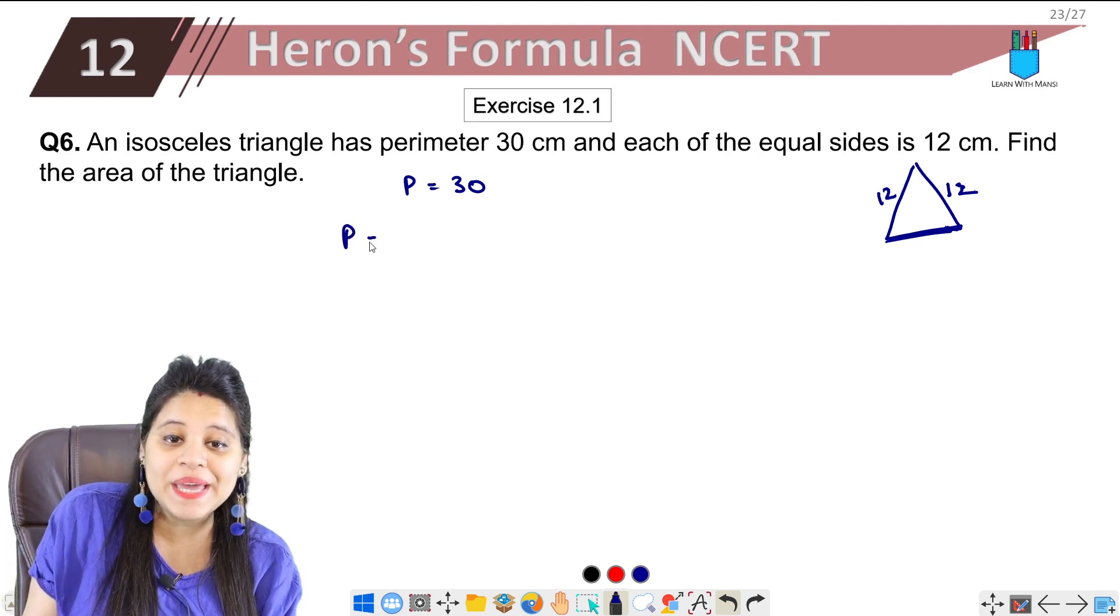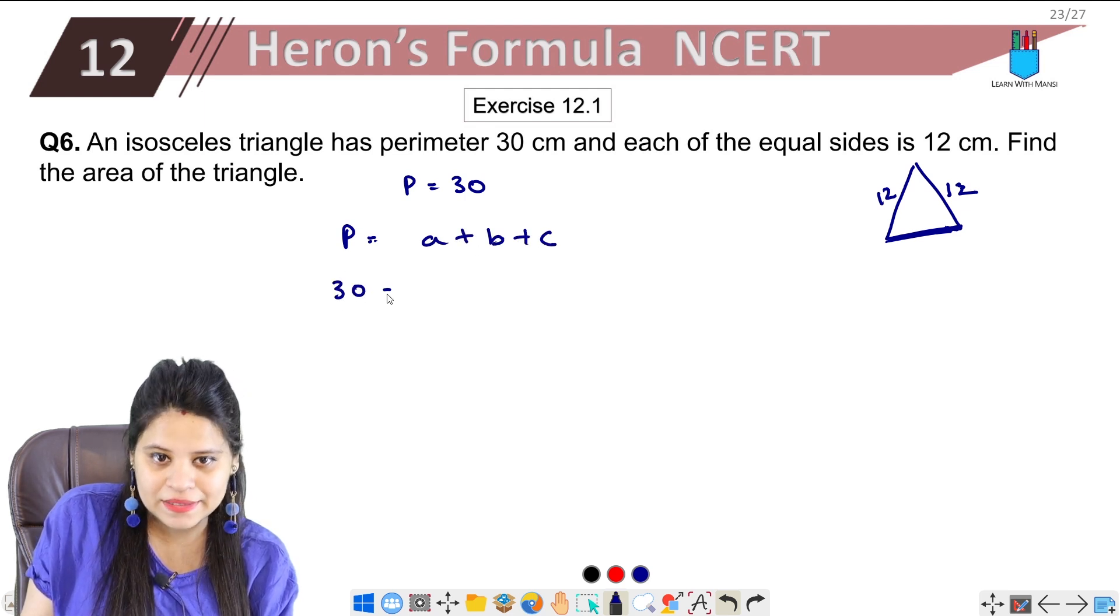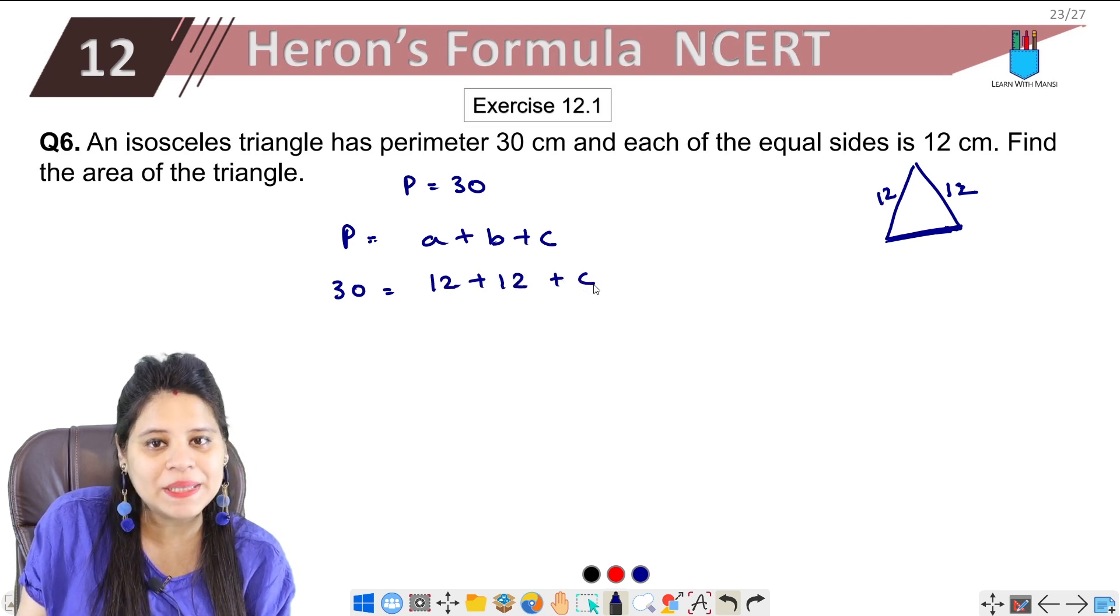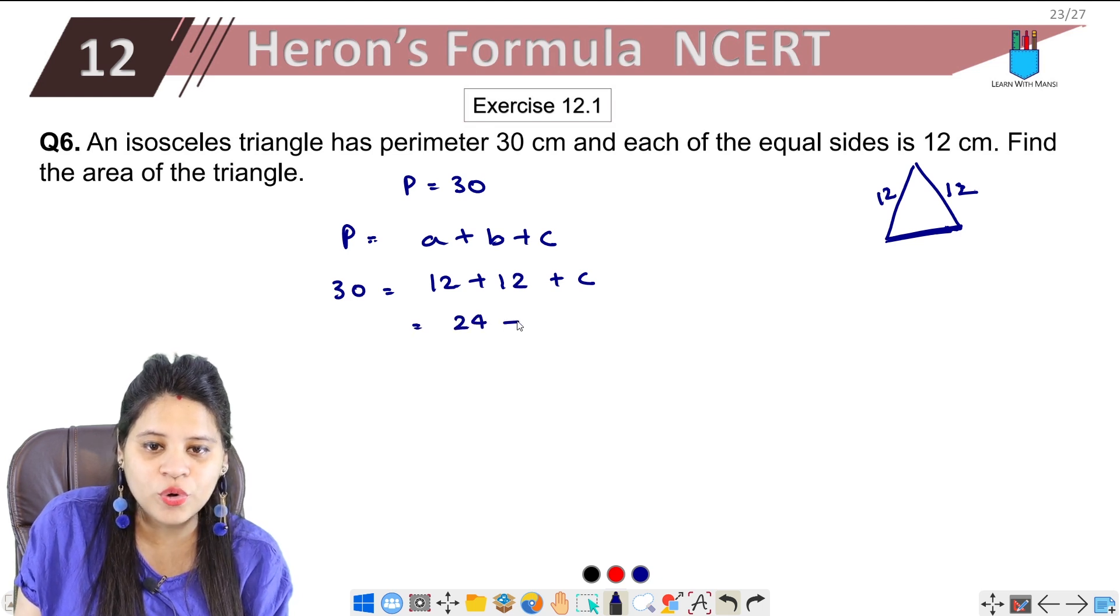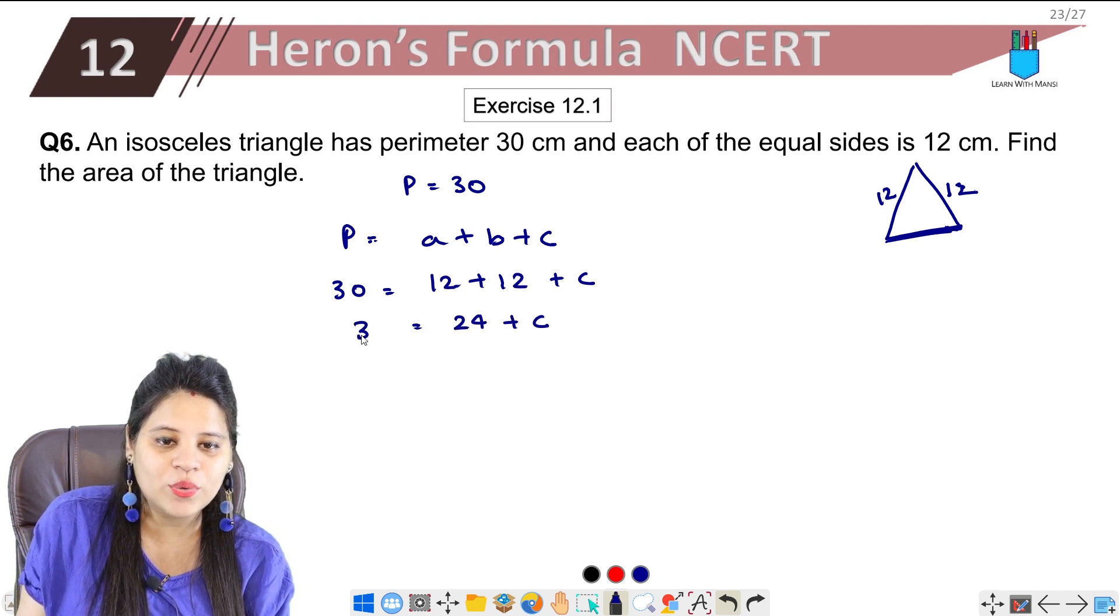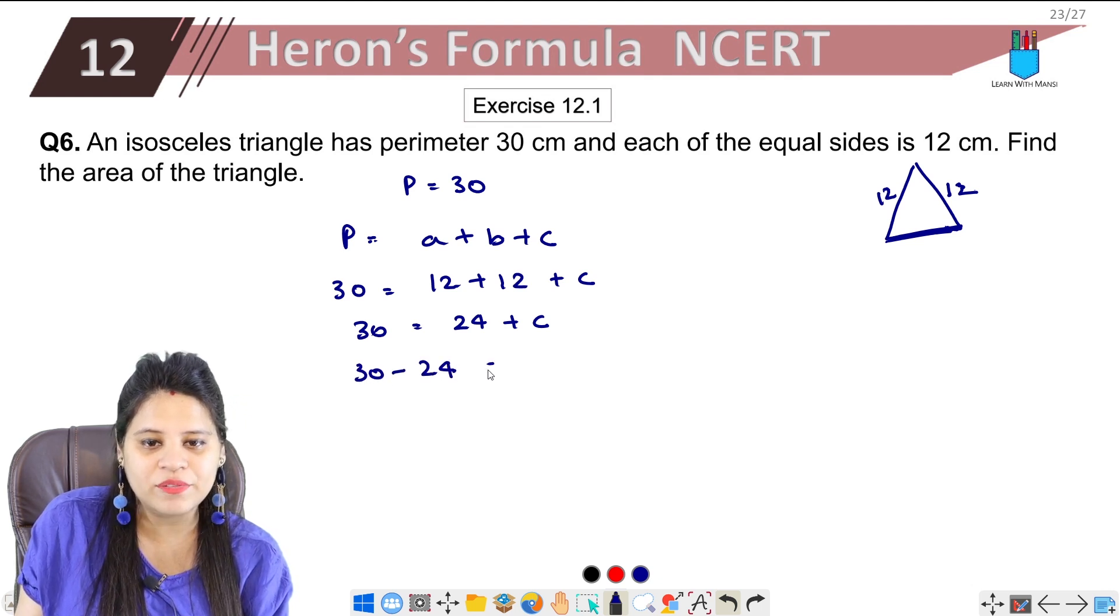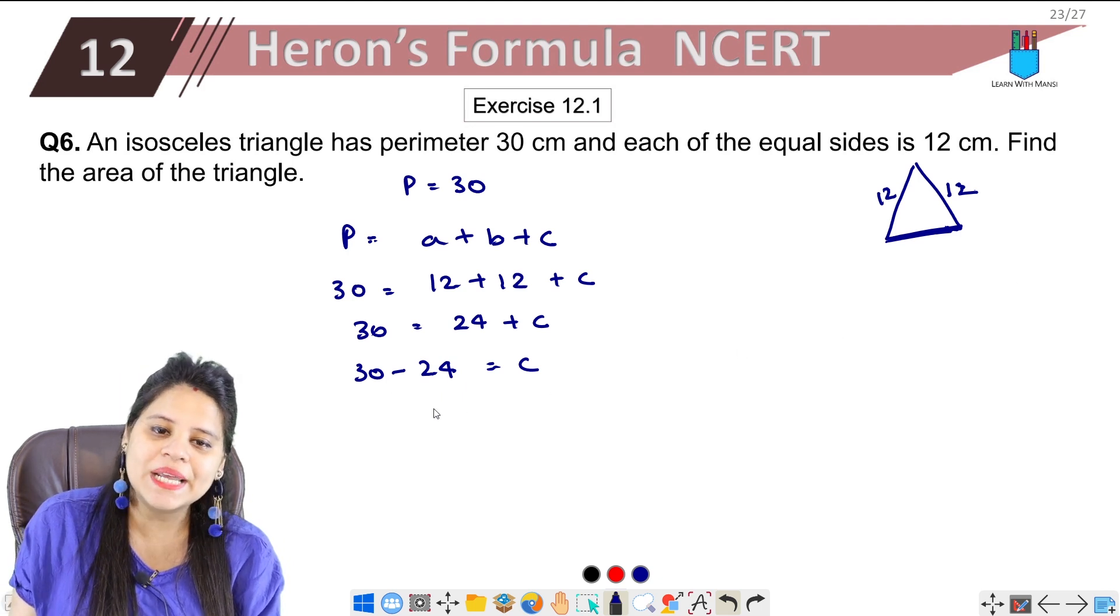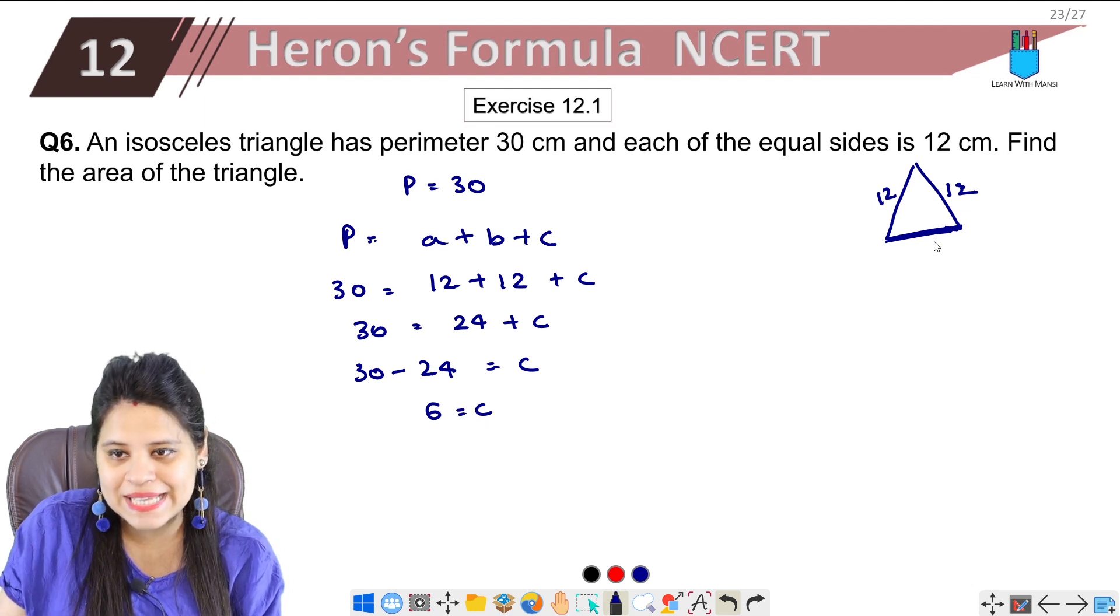Because perimeter is the sum of all sides. Perimeter is 30, two sides we know are 12 plus 12, c we don't know. So 12 plus 12 is 24 plus c equals 30. Here we get 30 minus 24 equals c. 30 minus 24 is 6, so c equals 6.